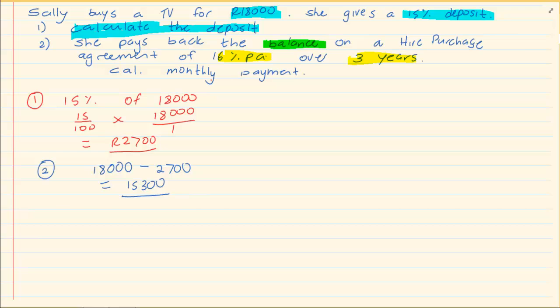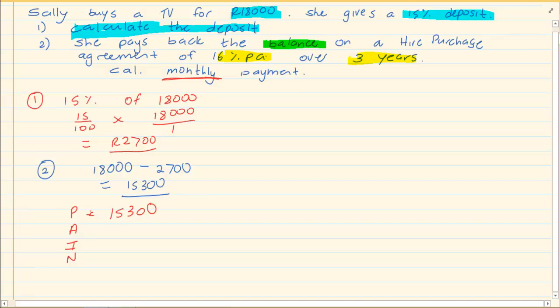She agrees to pay it back at 16% per annum over 3 years. What is her monthly payment? So first we need to calculate how much is she going to pay back. So we start by writing down our P, A, I, N. Now our P is 15,300 Rand because your P is how much you are loaning not how much the TV cost. Our I is 16% and our N is 3 years. Which formula are we going to use? We know it's a hire purchase which means it's a simple interest formula.